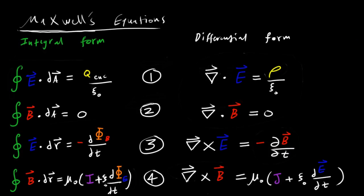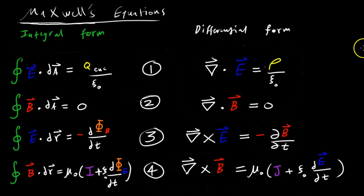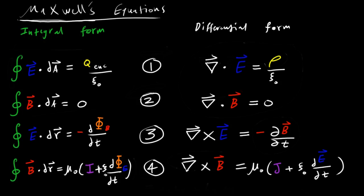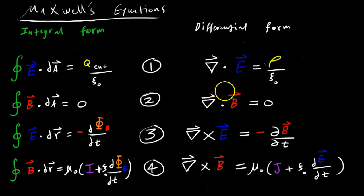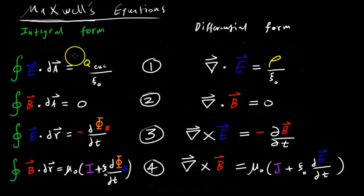Maxwell's equations come in an integral form and a differential form, and when you use these it depends on the situation. For example, if you have densities of charge, you'll use the differential forms. And if you have singular charges or singular currents going through a wire, you'll use the integral form. I'll give you an example soon.